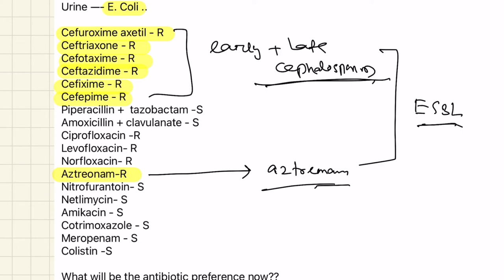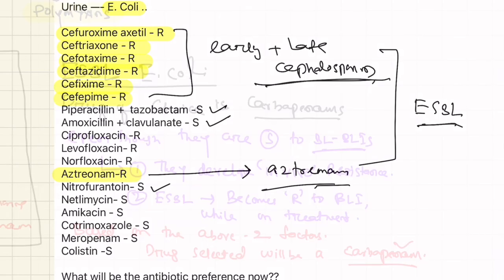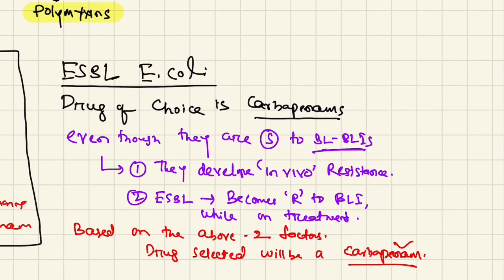One may argue why we're not giving piperacillin-tazobactam or amoxicillin-clavulanate - both are sensitive - or nitrofurantoin which is sensitive. For ESBL E. coli, the textbook definition is the drug of choice is carbapenems. If you find an ESBL organism, you have to use carbapenems even though they're sensitive to BL-BLIs.